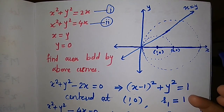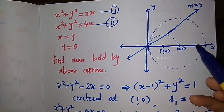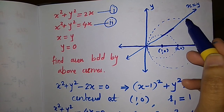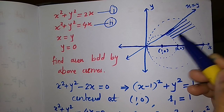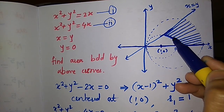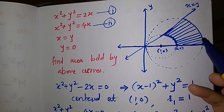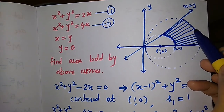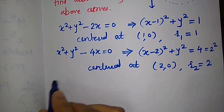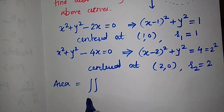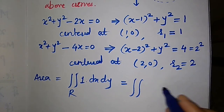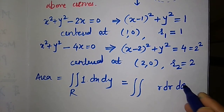The bounded region lies between the two circles, above y = 0 and below x = y. Since the curves are circles, we convert to polar form. The area formula is ∬_R dx dy, which in polar becomes ∬ r dr dθ. Using x = r cosθ, y = r sinθ, and x² + y² = r².